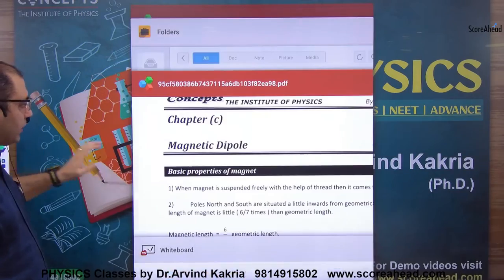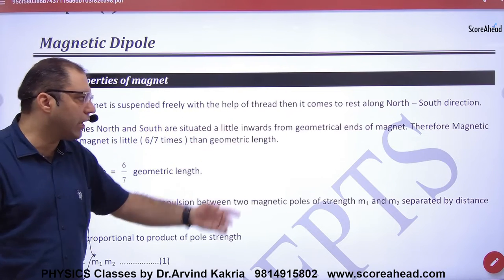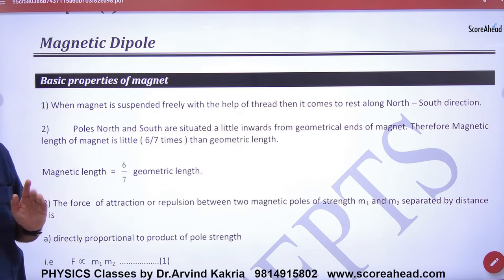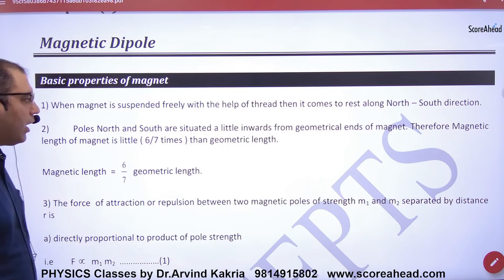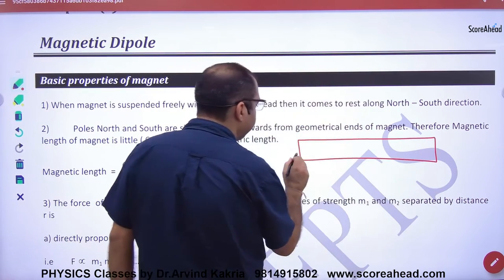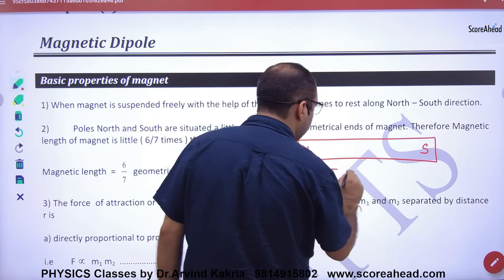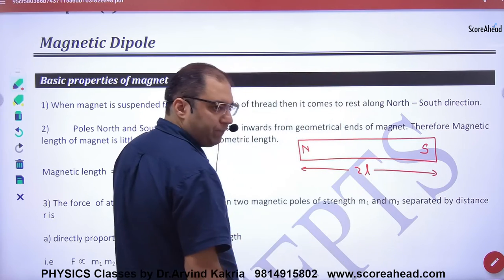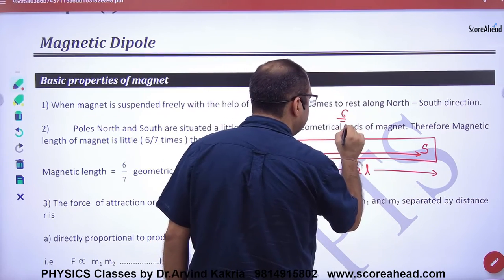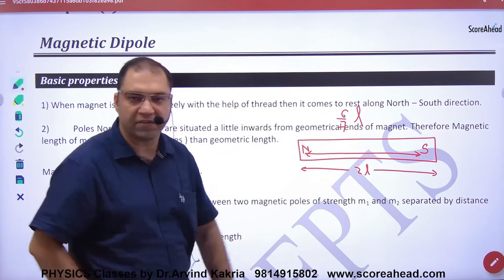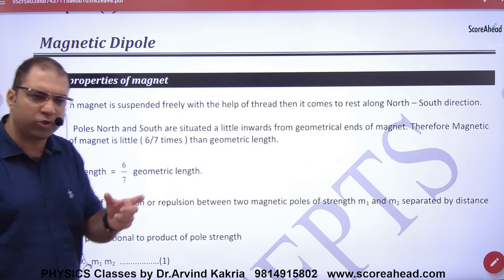Next, kuch properties hai magnetic dipole ki. Bar magnet ki property hai: when magnet is suspended freely with the help of a thread, toh north-south direction ko point out karti hai. Kaun sa? Jo visible hai, geographic ya magnetic. Poles of north and south are situated little inwards. Toh agar yeh bar magnet hai, yeh north hai, or yeh south hai. Toh iski geometrical length 2L hai, geometri ki length 2L hai. Lekin jo poles hote hai actual mein, woh toh aise andar ki taraf hote hai, separated by six by seven times L. Toh agar yeh L hai, toh yeh kitna hai six by seven times L. Yeh property jyada kaam nahi aati, bas waisi hi batara ho jo poles hote, andar ki taraf hote hai.